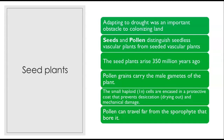Adapting to drought is an important obstacle to colonizing land, especially if you want to move away from bodies of water. Seeds and pollen distinguish the seedless vascular plants from the seeded vascular plants, and these seed plants arose 350 million years ago. Pollen grains carry the male gametes away from the originating plant to another plant. The small haploid cells are encased in a protective coat that prevents desiccation and mechanical damage.